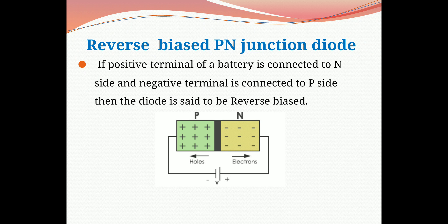As we know, for forward bias PN junction diode the positive terminal of the battery is connected to the P side and the negative terminal is connected to the N side. But for reverse bias PN junction diode it is exactly opposite — the positive terminal of the battery is connected to the N side and the negative terminal is connected to the P side. Therefore it is said to be a reverse bias PN junction diode.